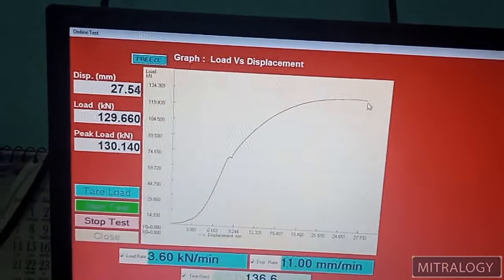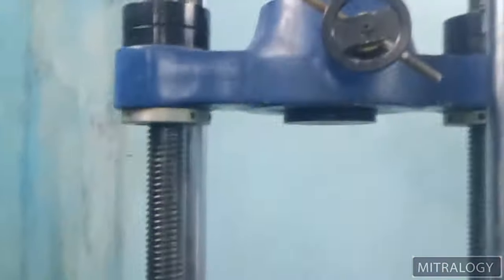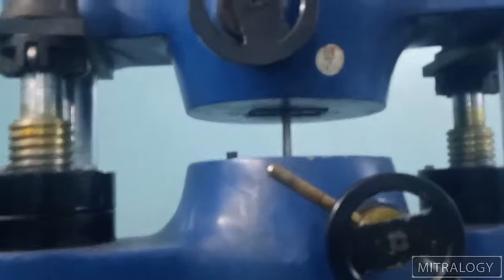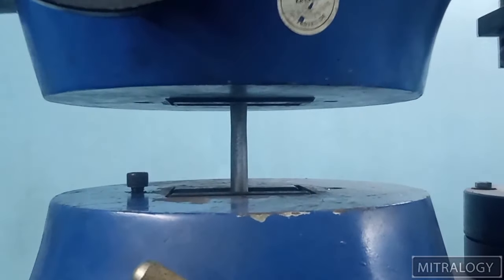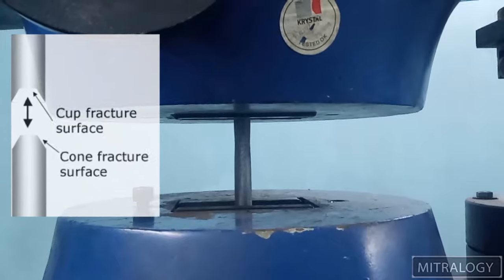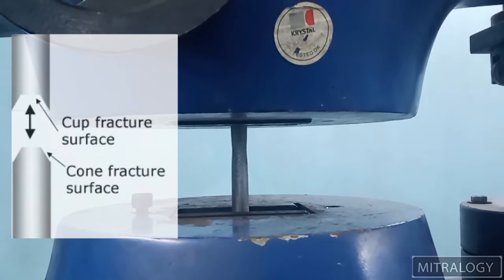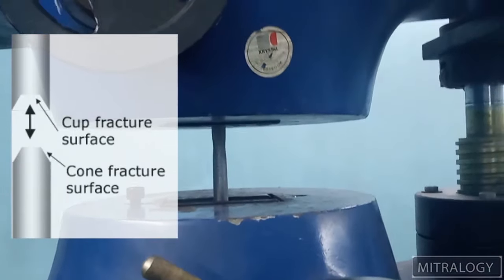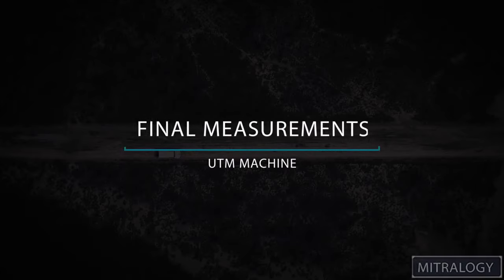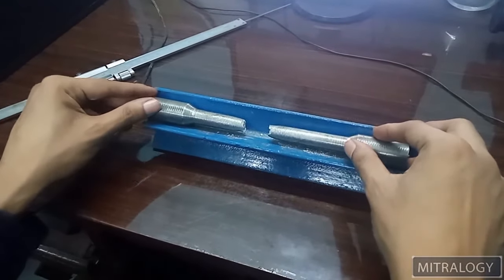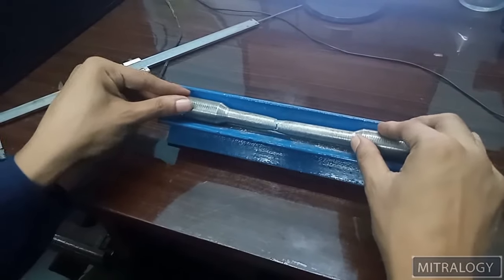Now the load is getting lowered now. You can see the cup and cone shape in middle. So these are two broken parts. I have to measure the elongated gauge length now.